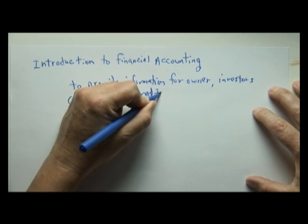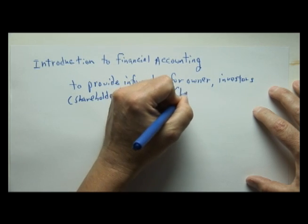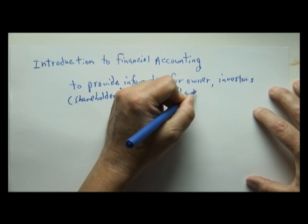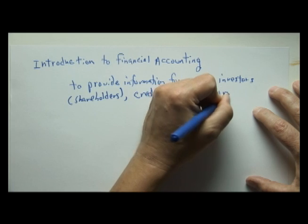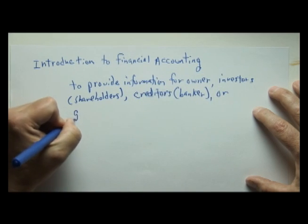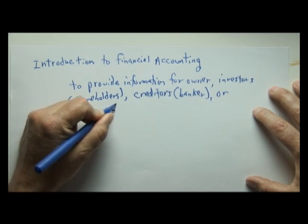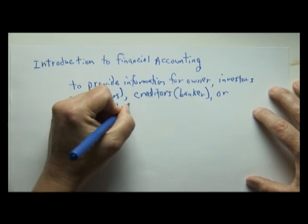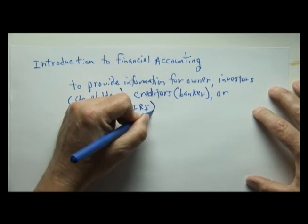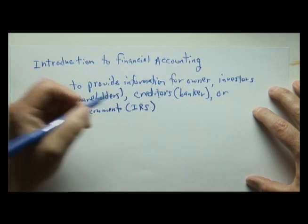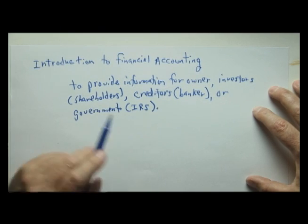Financial accounting also aims to provide information for creditors. Another name for creditors, or an example of a creditor, would be a banker to whom a business owes money, or even the government, because the government needs financial information from businesses in order to collect information and for the business to pay taxes. As an example, we have the IRS.